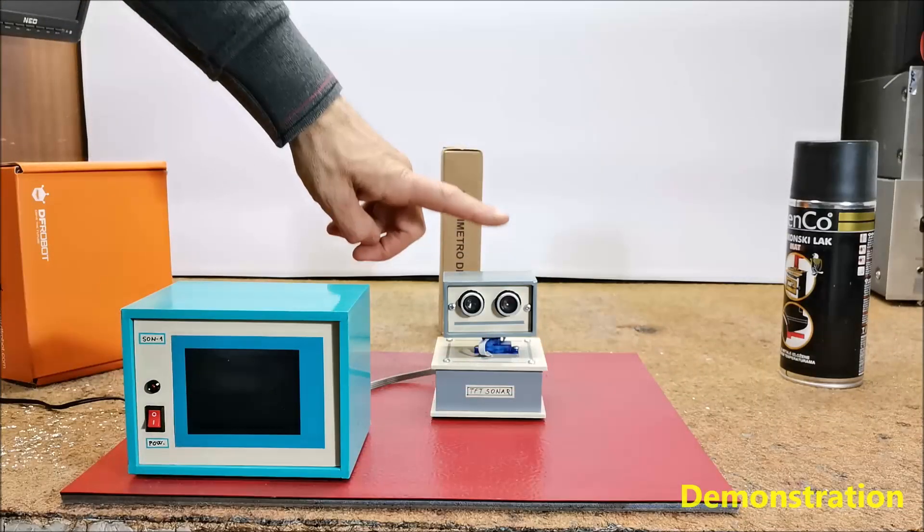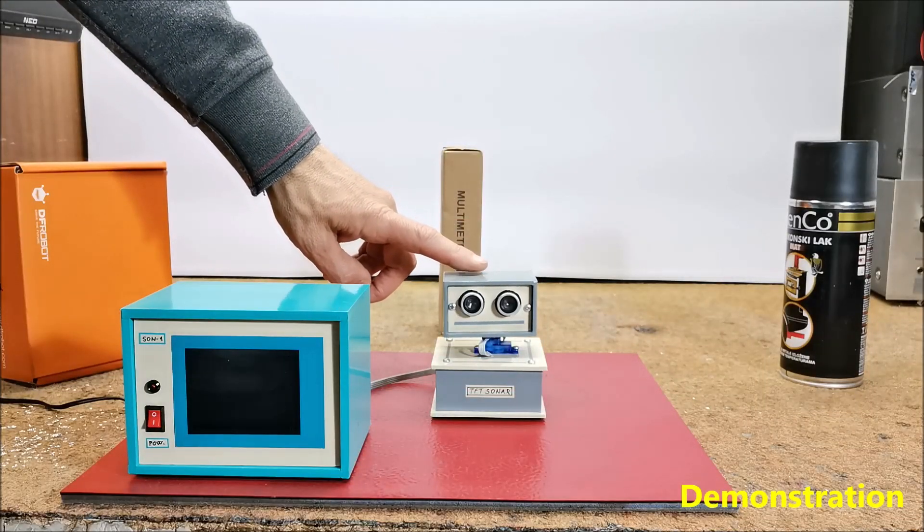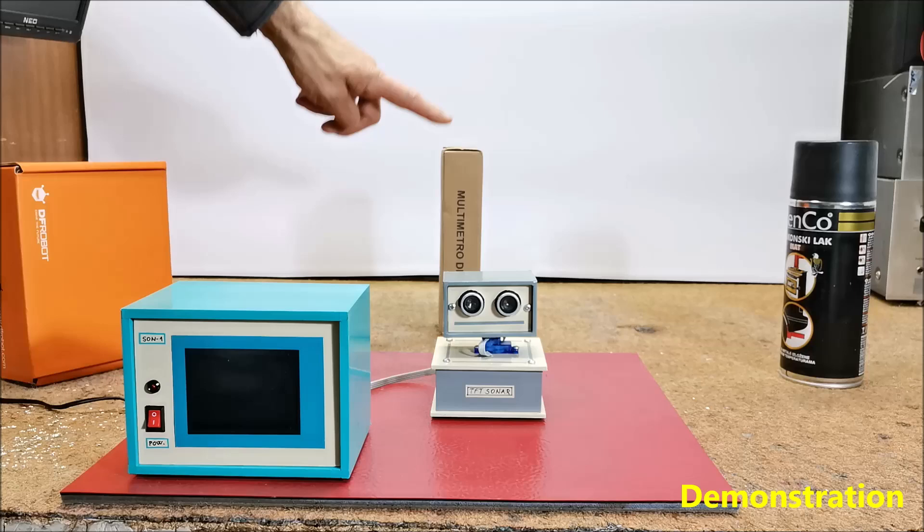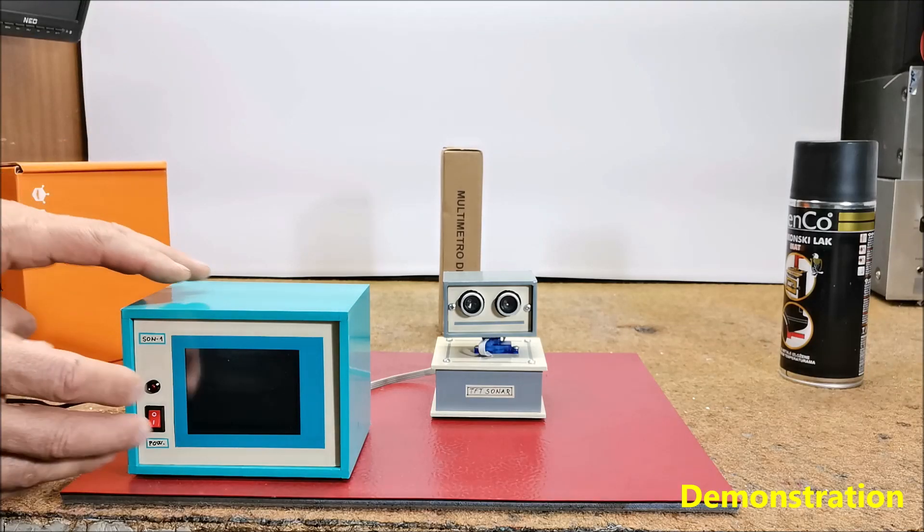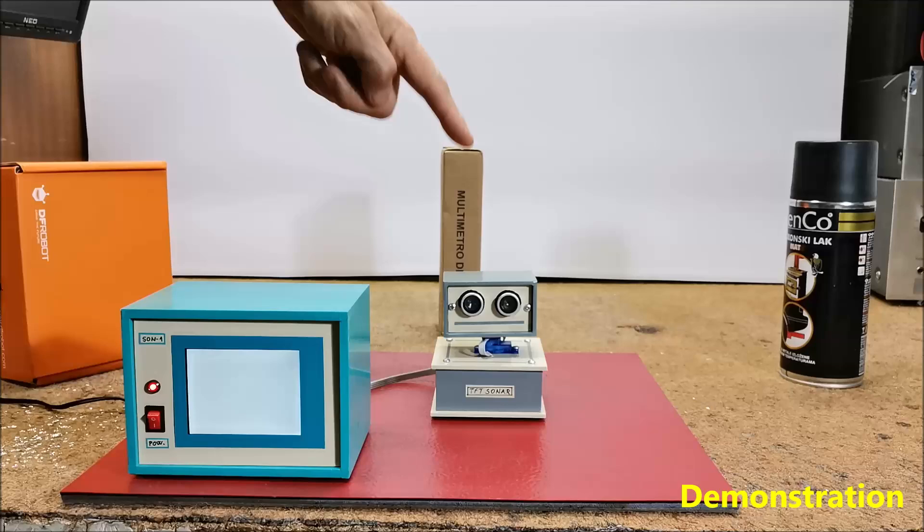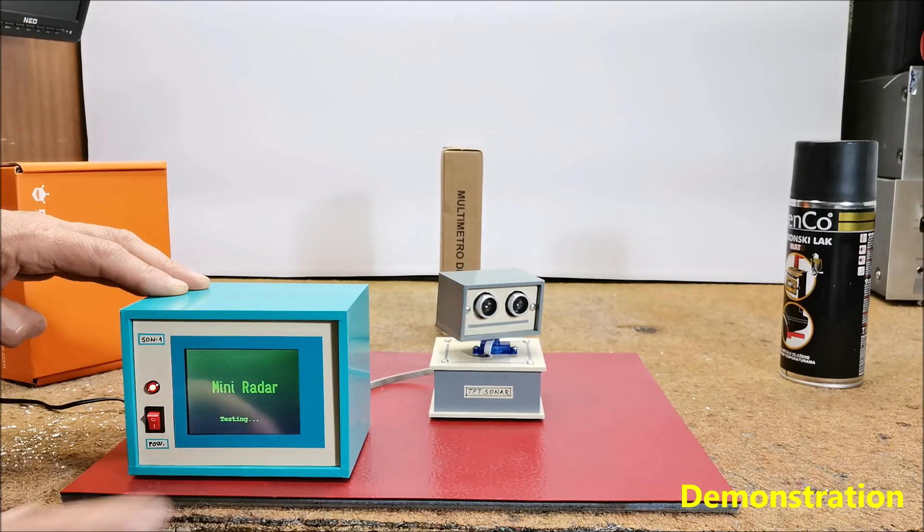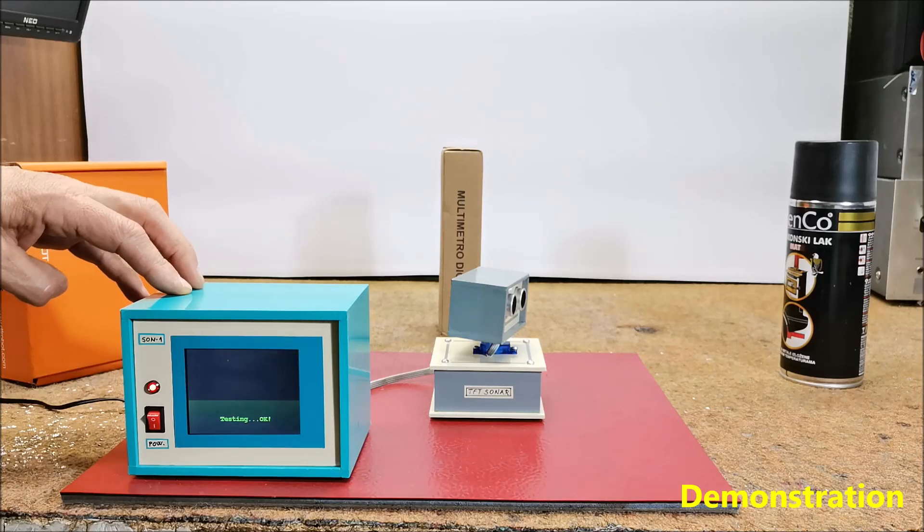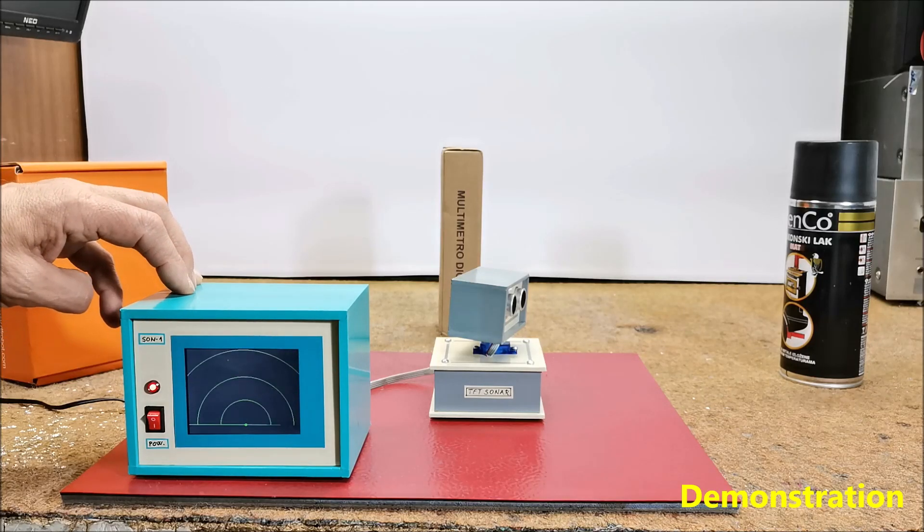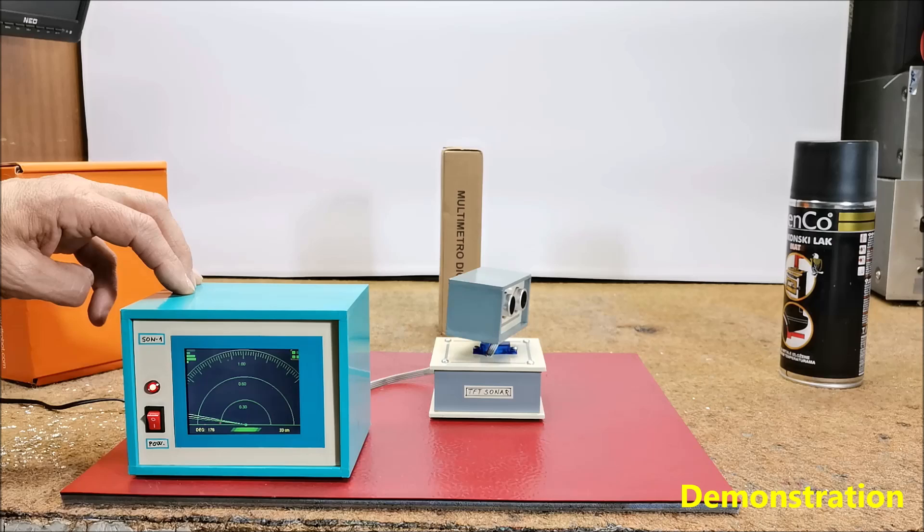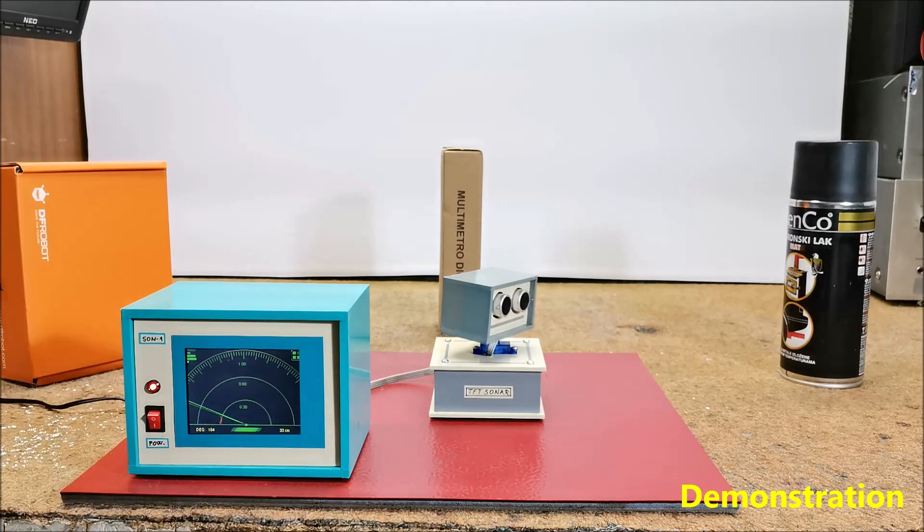Now we mount the sensor on the servo and place the obstacles to be detected. At power on the servo is tested first, then the radar-like screen is drawn on the display and scanning begins. Obstacles are marked with red dots. This is this obstacle.